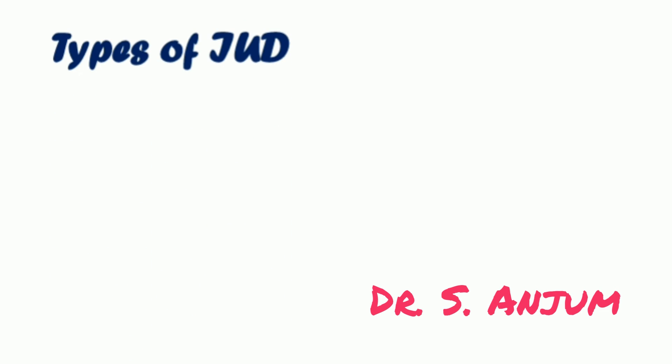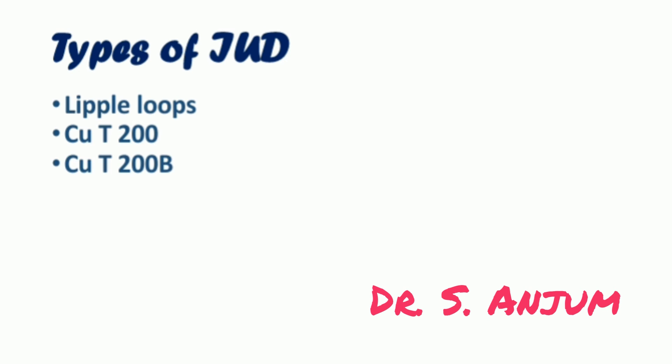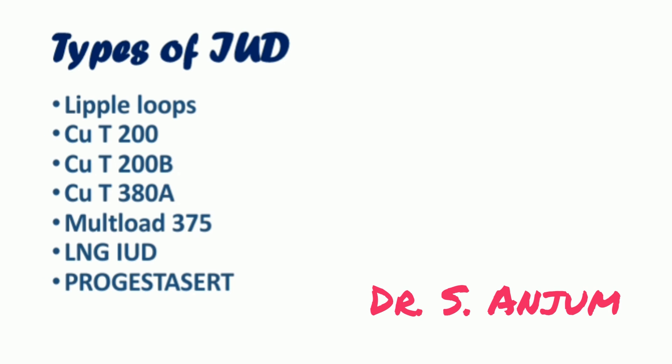What are the different types of IUD? These are Lippes loops — not used nowadays as they are a very first generation IUD. Other types include Copper T 200, Copper T 200B, Copper T 380A which has very good efficacy, Multi-load 375, LNG or levonorgestrel IUD, and the Progesterone-releasing IUD.